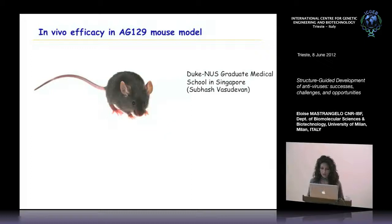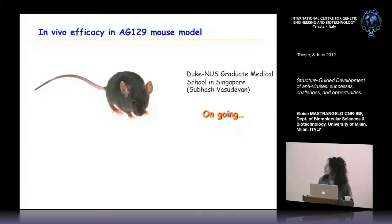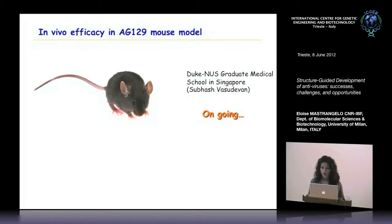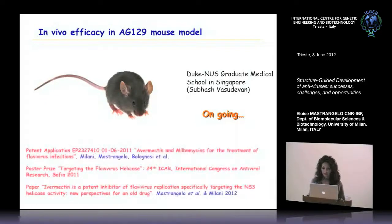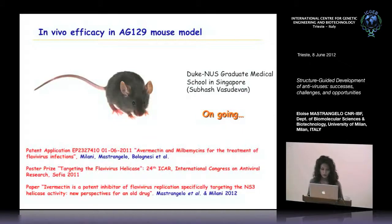We are starting an in vivo experiment in collaboration with Subash Vasudevan in Singapore using the AG129 mouse model, which is currently the best model for dengue virus. We have applied for a patent for the new use of ivermectin in the treatment of Flavivirus infections, and the paper is already published.